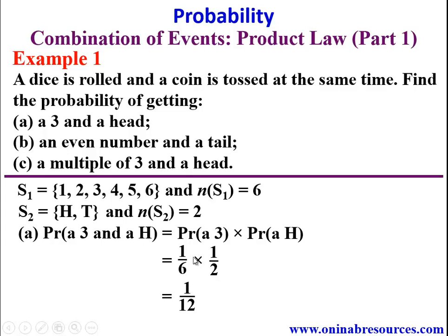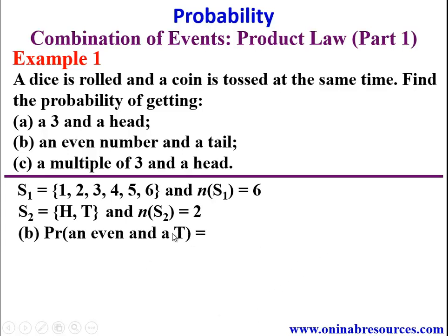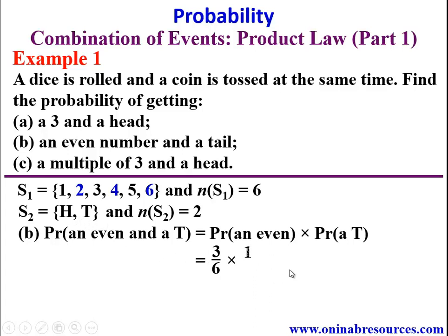Simplifying 1/6 × 1/2 gives 1/12. That is the end of solution to Example 1a. For part (b), probability of getting an even number and a tail = P(even) × P(tail). The even numbers in S1 are 2, 4, and 6 — three outcomes — so P(even) = 3/6. Then 3/6 × 1/2 simplifies to 1/4. So 1/4 is the answer to Example 1b.